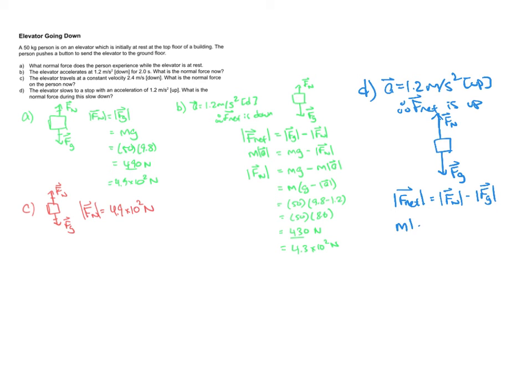F net is MA, so I'll make that replacement. Gravity is Mg, so I'll make that replacement. And then I'll isolate for normal. So I'm just going to add Mg to both sides, or take that minus Mg on the right and write it as plus Mg on the left.